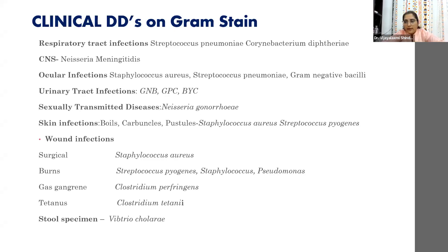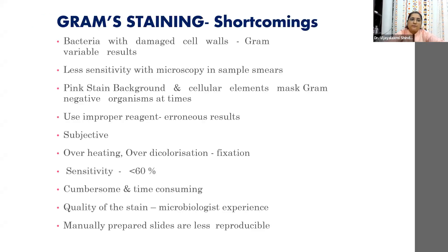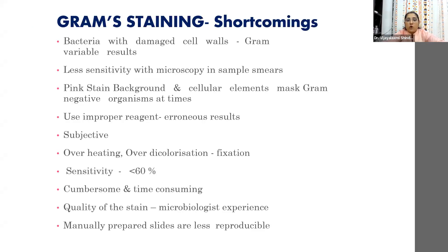Stool specimens commonly received for hanging drop — if you stain the specimen and get comma-shaped bacilli, those are Vibrio, which can be confidently reported. So gram staining, the most inexpensive method of reporting any infection, can give a provisional diagnosis and help the clinician treat the patient. Gram staining shortcomings: bacteria with damaged cell walls can give gram-variable results.